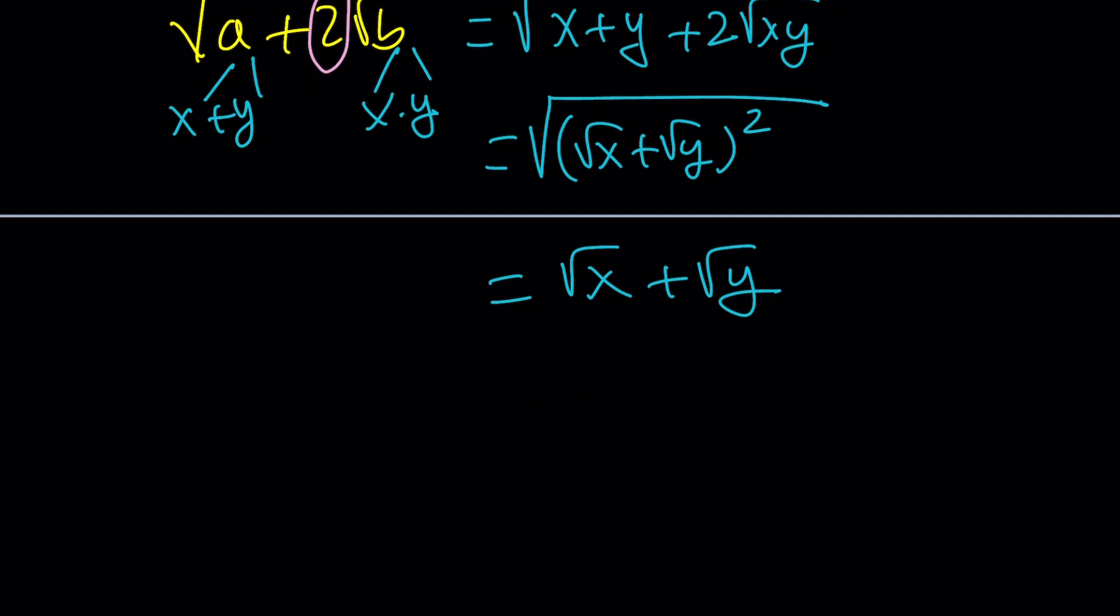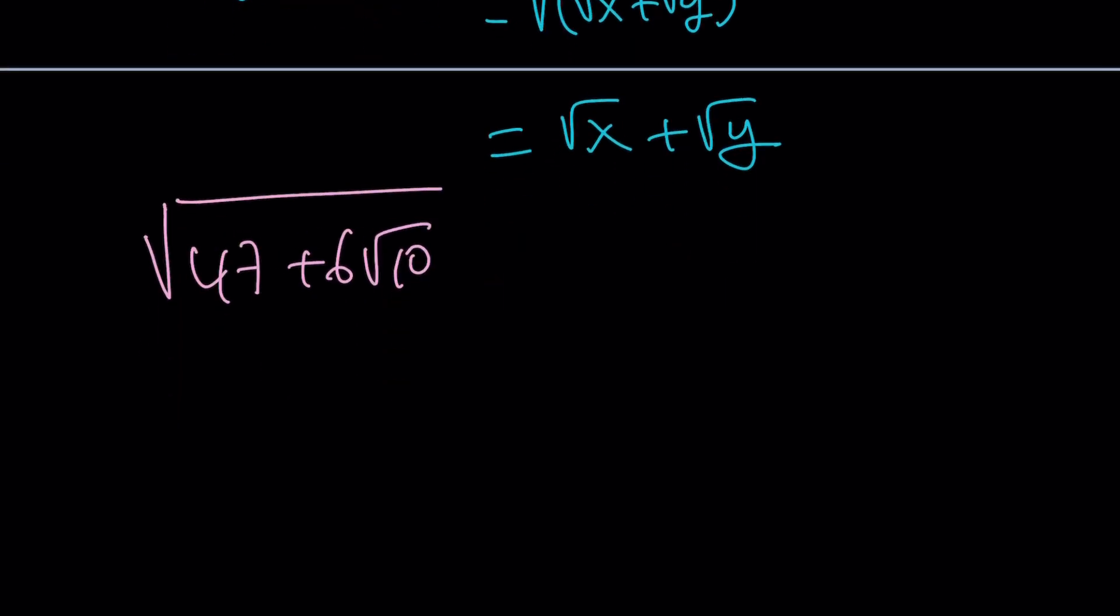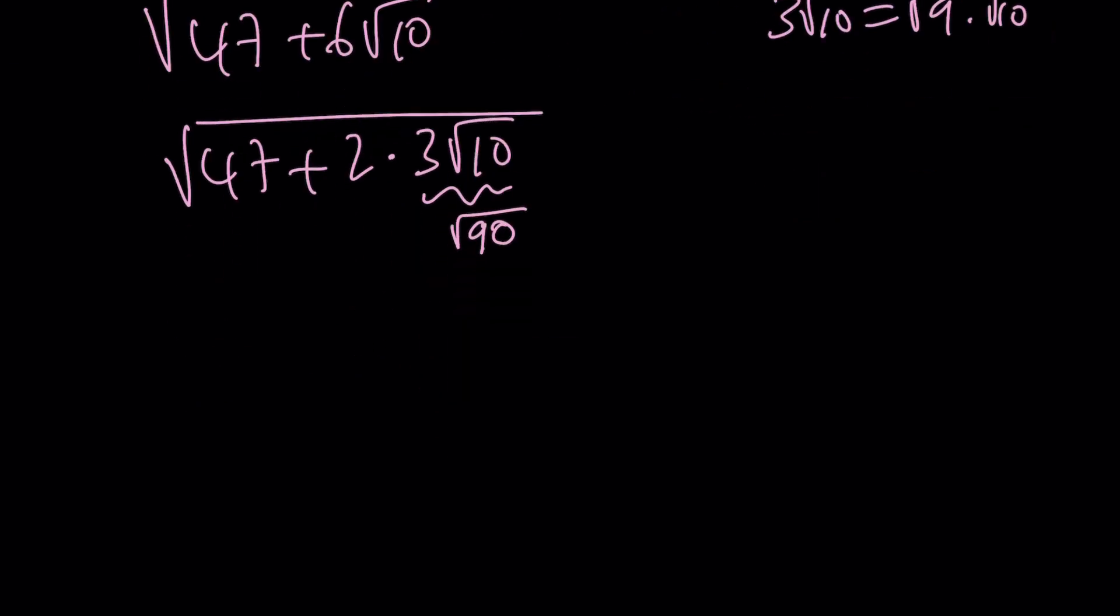But I do have a 6, so how am I going to fix that? Let's go ahead and fix it by manipulating expressions. First of all, notice that 6 is 2 times 3. And 3√10 can be written as √90. Because if you square the 3 and put inside and multiply by 10, you're going to get that. So our expression kind of turns into something that looks like this. It all boils down to finding two numbers whose product is 90 and whose sum is 47. And those numbers are 45 and 2.